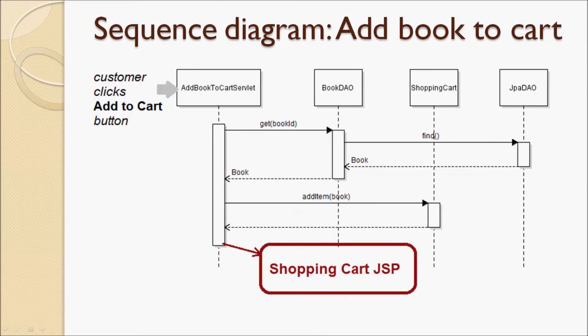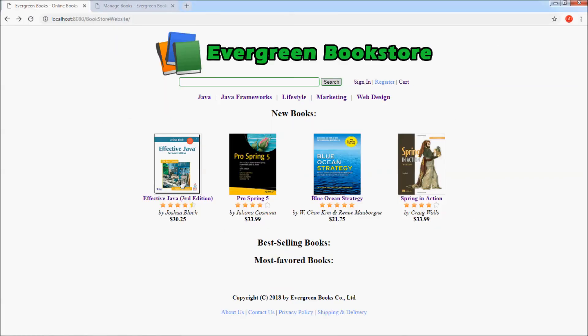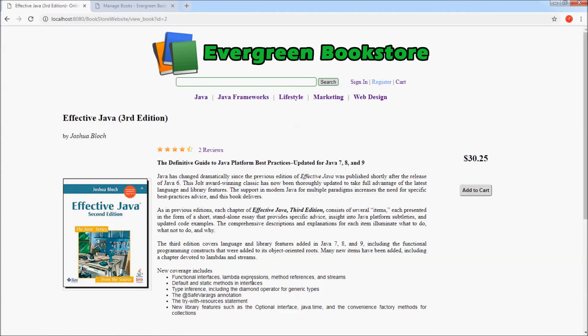Now let's see the sequence diagram for the Add Book to Shopping Cart function. When the customer views books in the home page, we have three of three languages.